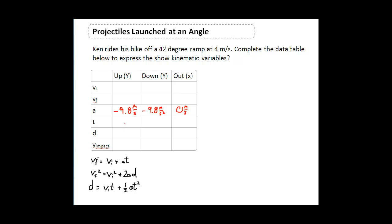We know now that he hit the ramp at 42 degrees. So he hits this ramp at 42 degrees. And when he hits the ramp, his velocity is 4 meters per second. Now that's going to be a resultant velocity.